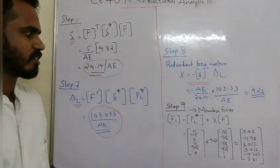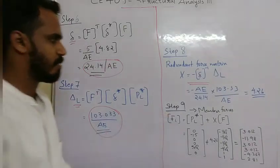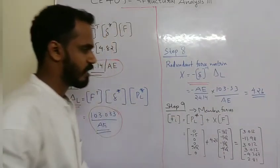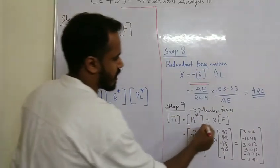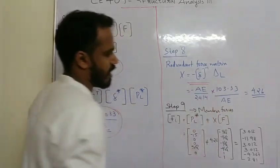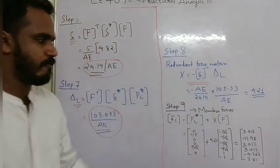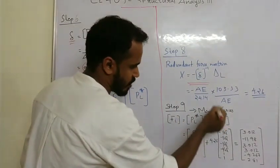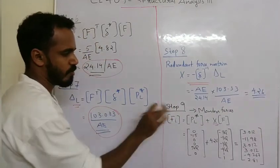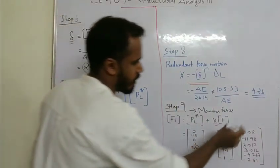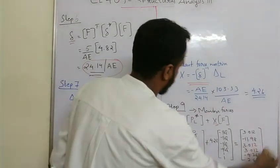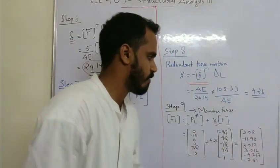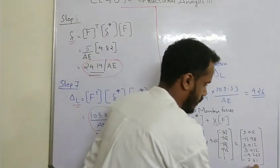X value is equal to 4.26. Return and use the force matrix — then step 9: member force. F is equal to PL star plus X times F. So we substitute the PL star value, X, and F. Substituting gives the final member force for each member.